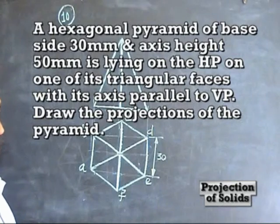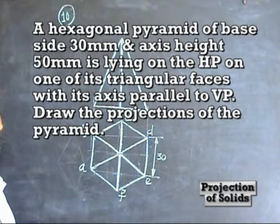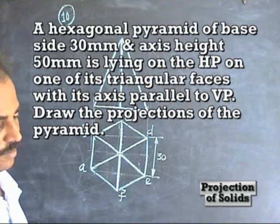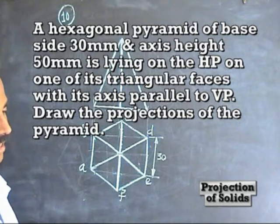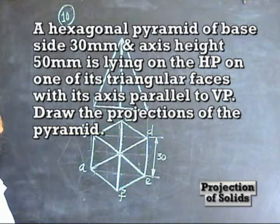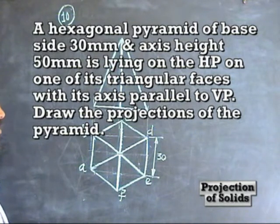Problem number 10: a hexagonal pyramid of base side 30mm and axis length 50mm is lying on the HP on one of its triangular faces with its axis parallel to VP. We are going to draw the projection.